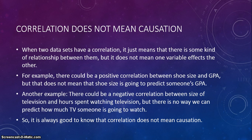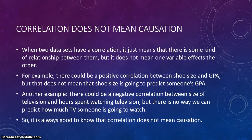There are other factors that go into someone's GPA — there just happens to be a positive correlation between shoe size and GPA. Another example: there could be a negative correlation between size of television and hours spent watching TV, but we cannot predict how much someone watches TV based on their television size. Correlation does not mean causation — we have to go through other steps to prove causation. And that is the end of tonight's notes.